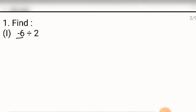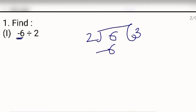Now let us start this question. In this question, we have one negative sign, so the answer will be negative. Divide 6 by 2 — when you divide 6 by 2, what do you get? 2 threes are 6, so this is 3, and the sign will be negative. This is your answer: minus 3.